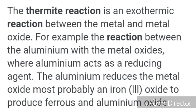Now let us learn about the thermite reaction. It is an exothermic reaction — in an exothermic reaction, heat is liberated. The thermite reaction takes place between a metal and a metal oxide. For example, the reaction between aluminum and a metal oxide, where aluminum acts as a reducing agent, reducing iron oxide to produce iron and aluminum oxide.